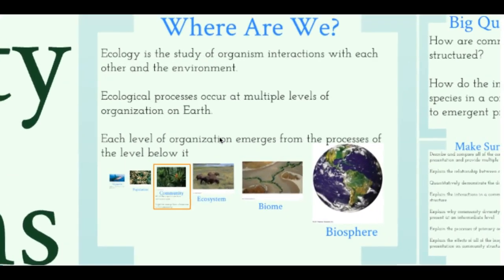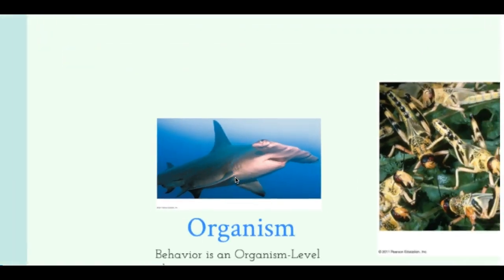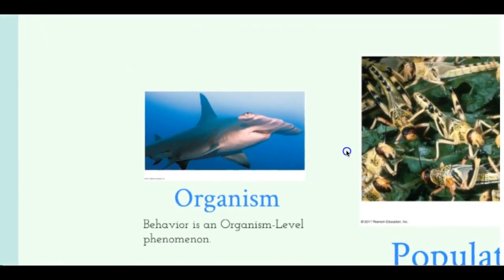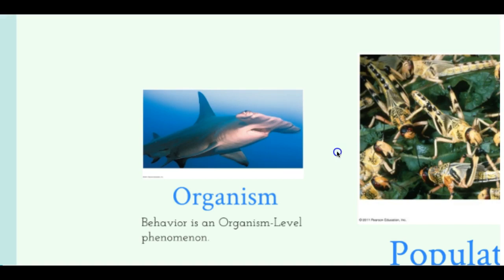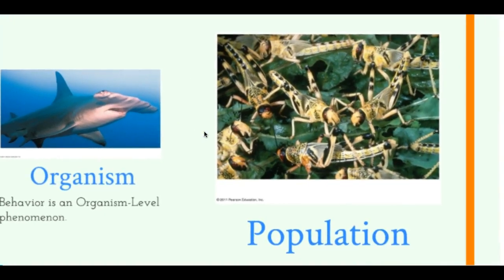The first thing we want to talk about is where we are. There are different levels of organization on Earth. The smallest organization is an organism — that's one individual. The next level up is called a population. You need to know the definition: a population is a group of organisms of the same species living in the same area. The key point is they're the same species.